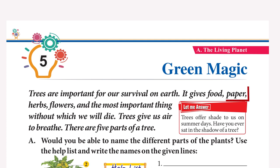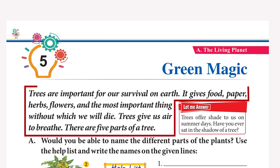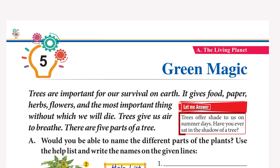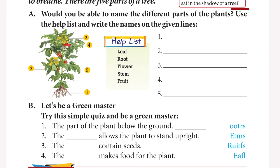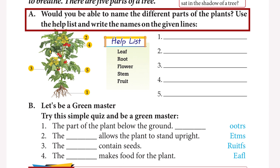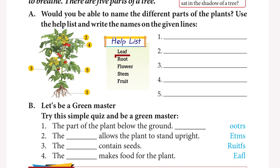Chapter 5: Green Magic. Trees are important for our survival on Earth. They give us food, paper, herbs, flowers, and the most important thing — air to breathe. There are five parts of a tree. Trees offer shade to us on summer days. Would you be able to name the different parts of the plant? Root, Flower, Leaf, Fruit, Stem.